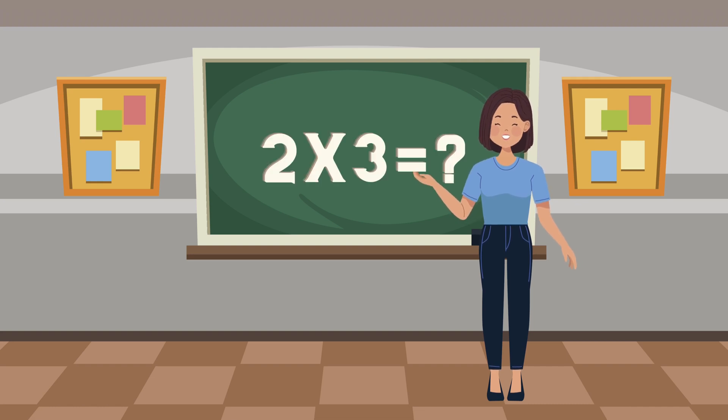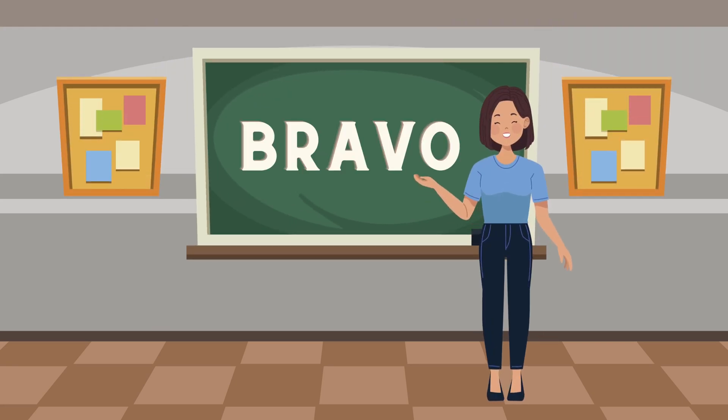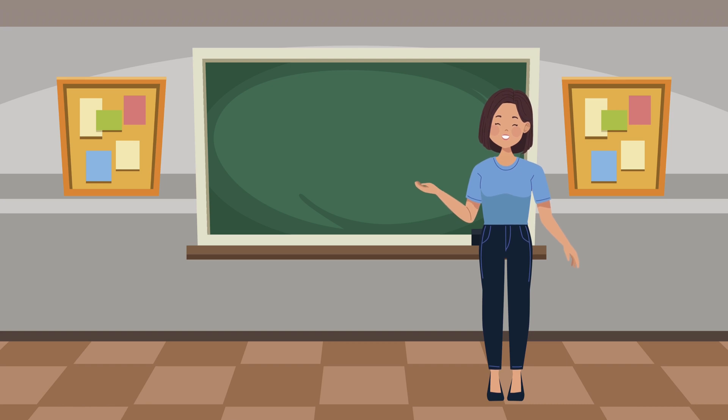2 times 3. 2 times 3 is 6. Bravo! You're like little math wizards. Now, let's skip along our magical path.